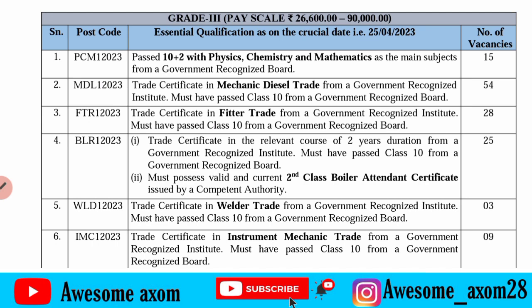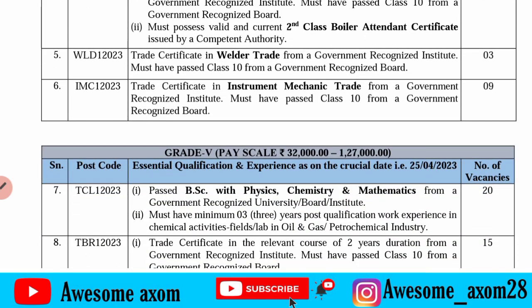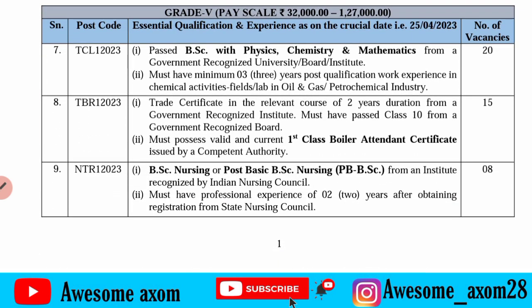There is the fifth post that is adopted, and you can apply for class 10th post. The next is instrument mechanic trade — for this post, the minimum qualification is class 10 pass. Candidates can apply for instrument mechanic trader posts. There are 20 vacancies for local candidates. Physics, chemistry, or mathematics is required. Local work experience in chemical activities, lab, oil, or petrochemical industry is needed.